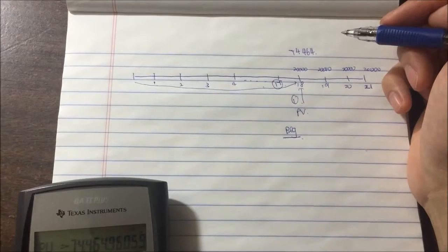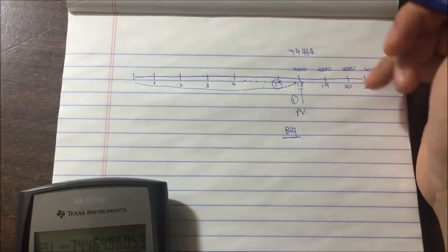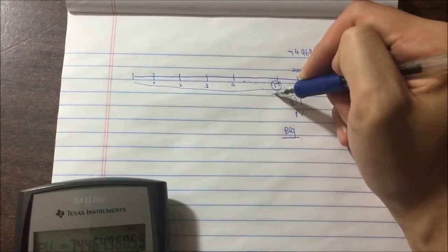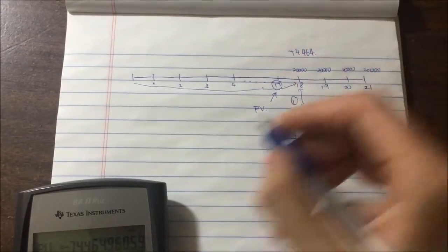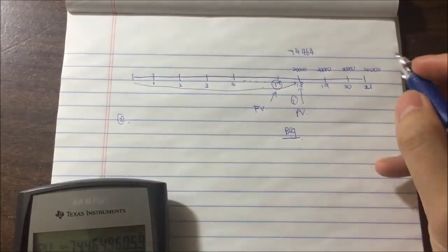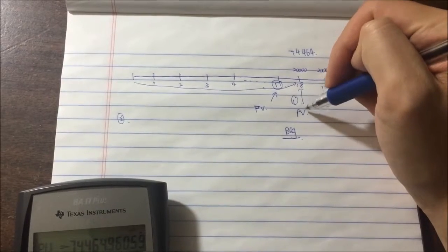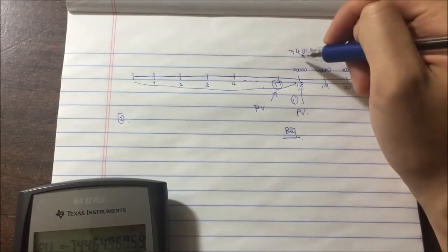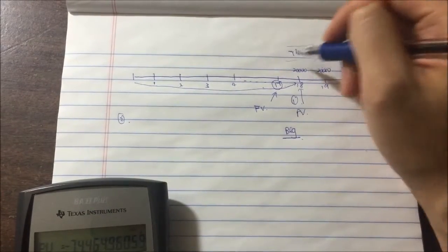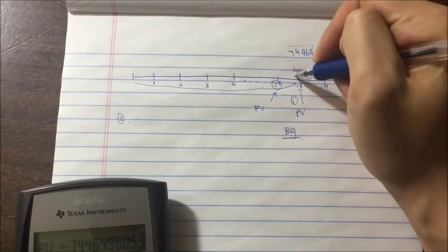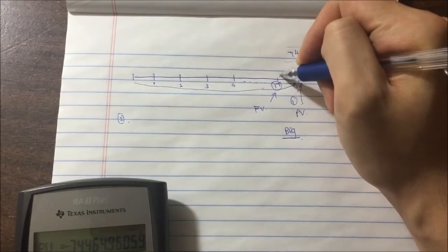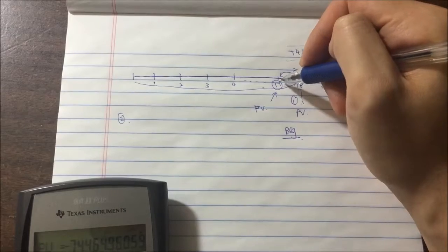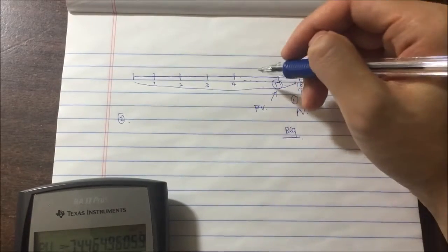This is the future value for the second part of the problem, but the first part is present value. We have $74,000 at this point, so we need to discount back one extra period in order to plug in the future value for the second annuity problem.